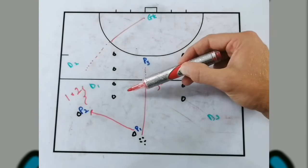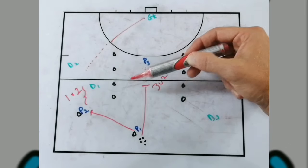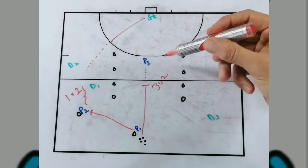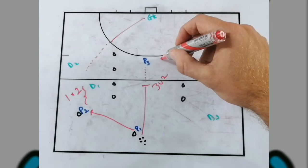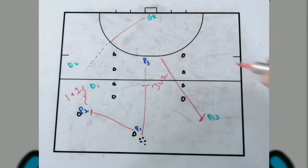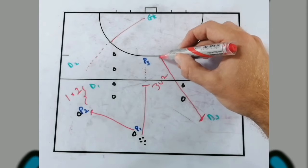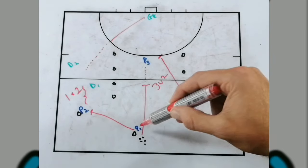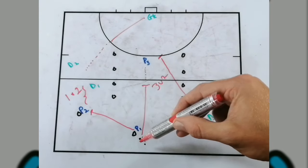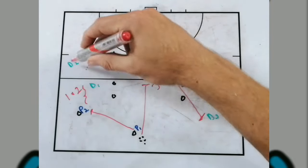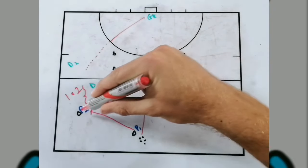If you intercept the ball, wherever you intercept it, you're going to try and pass the ball straight away to defender number 3. So if defender number 2 receives the ball, they pass it straight away to that defender. As soon as that happens, player 1 goes out of the scenario and now it's going to be the three defenders versus the two attackers.